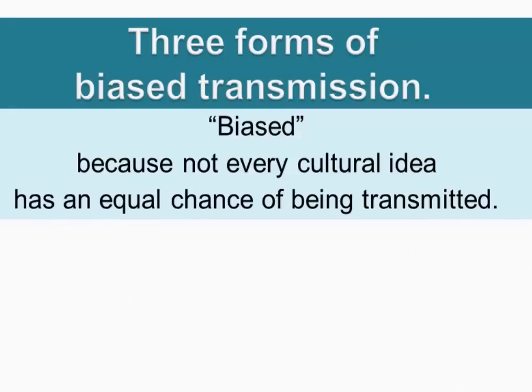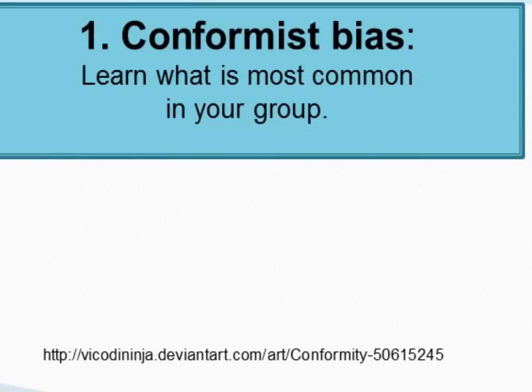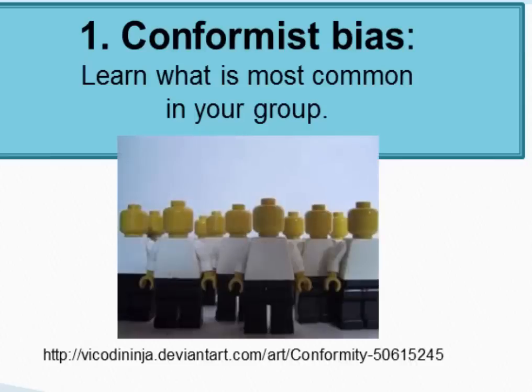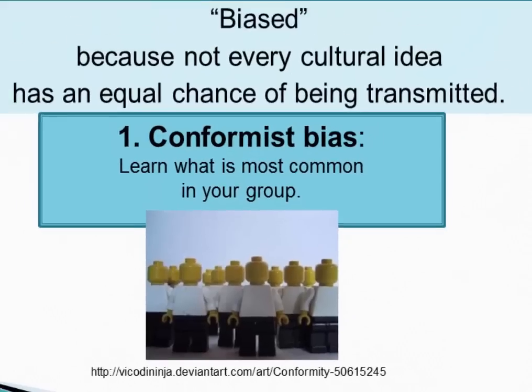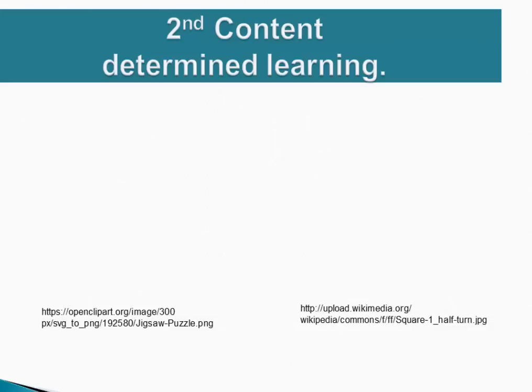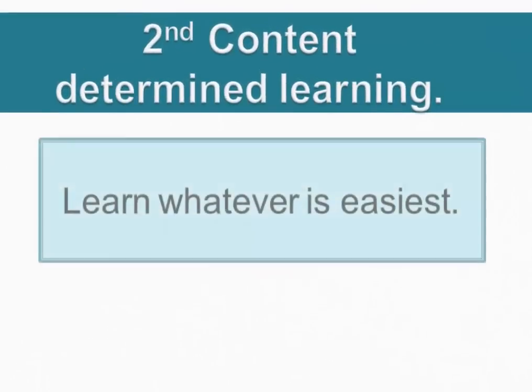There are three forms of biased transmission that Boyd and Richerson have modeled. They are 'biased' because not every cultural idea has an equal chance of being transmitted — not everything we come up with will be copied by someone else. The first bias is called 'conformist bias': simply doing what everyone else is doing. You learn the most common pattern in your group and strive to conform. If what they're doing turns out to be adaptive, that's a good choice — you don't have to learn through trial and error.